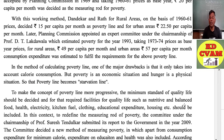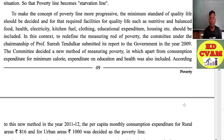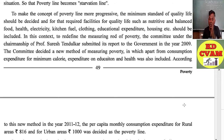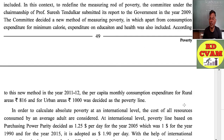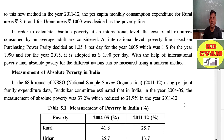In this context, to redefine the measuring yardstick of poverty, the committee under the chairmanship of Professor Suresh Tendulkar submitted its report to the government in 2009. The committee decided a new method of measuring poverty in which, apart from consumption expenditure for minimum calories, expenditure on education and health has also been included. According to this new method, in the year 2011-12, the per capita monthly consumption expenditure for rural areas is rupees 816.